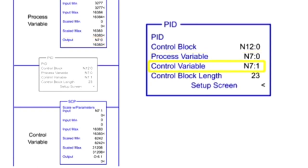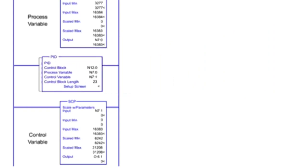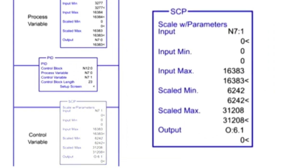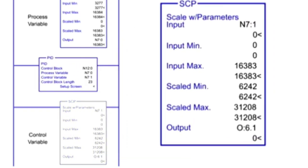The control variable parameter is programmed as an integer, which is the memory address for the output value. Next, the control variable range of 0 to 16,383 is scaled to an analog output module using the second Scale with Parameters instruction.